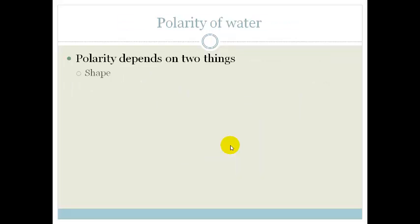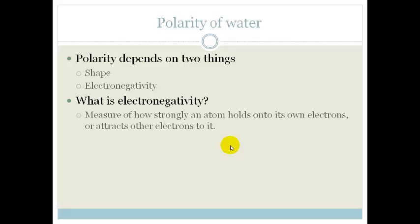Now, polarity depends on two things: the shape and the electronegativity. But what is electronegativity? Electronegativity is a measure of how strongly an atom holds onto its own electrons or attracts other electrons to it.